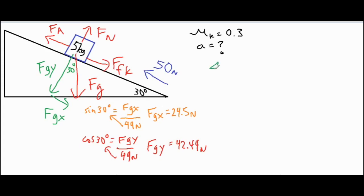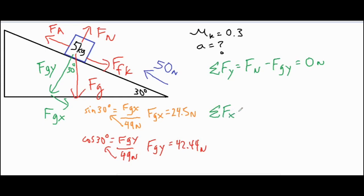Now that we have our components, we can find the sum of forces along the y and x directions. Along the y direction, the normal force pushes up and fgy pushes down, which equals zero newtons because the mass is at equilibrium in the perpendicular direction. For the sum of forces in the parallel or x direction, we have 50 newtons pushing it upwards.